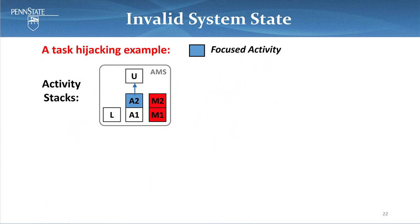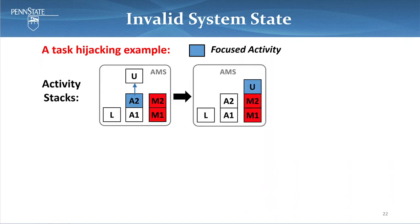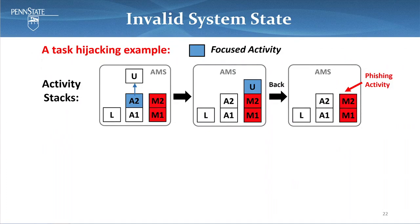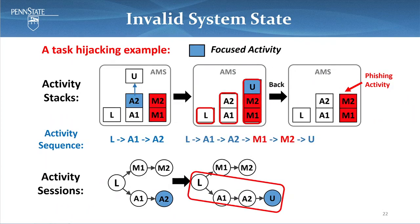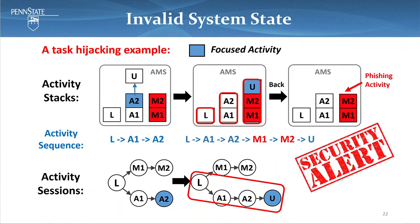In the task hijacking attack example, the user is interacting with application A, where A2 wants to start activity U. By abusing the multitasking features, U is placed on top of a malicious task M instead of task A, such that when the user clicks the back button, it goes back to the phishing activity of M while the user still believes they're working with A. Looking at the activity session, we find the activity sequence in the back stack is inconsistent with the activity session — M1 and M2 are inserted into this activity sequence. So in this case, a security alert is raised.